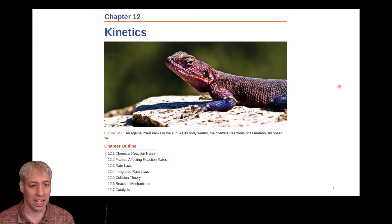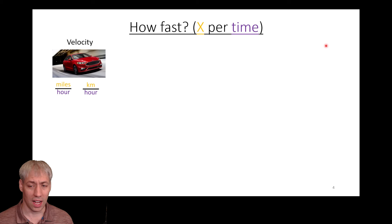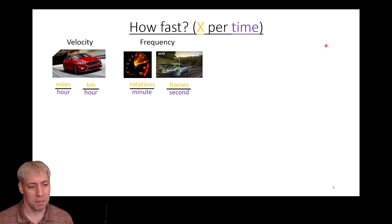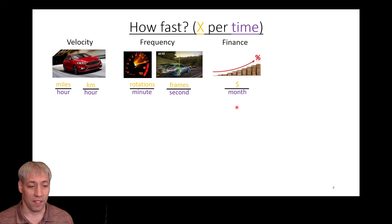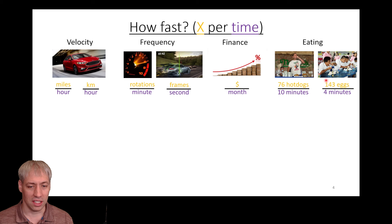When we talk about rates — the rate of anything — we're talking about how fast it is. That is whatever event or thing is generated per unit of time. This could be velocity in miles per hour, frequency in rotations per minute, or frames per second. In finance it could be dollars per month. In eating, 76 hot dogs per 10 minutes is the world record, and 143 eggs per four minutes is the egg-eating world record. In all these cases it's the amount of something that changes per unit time.